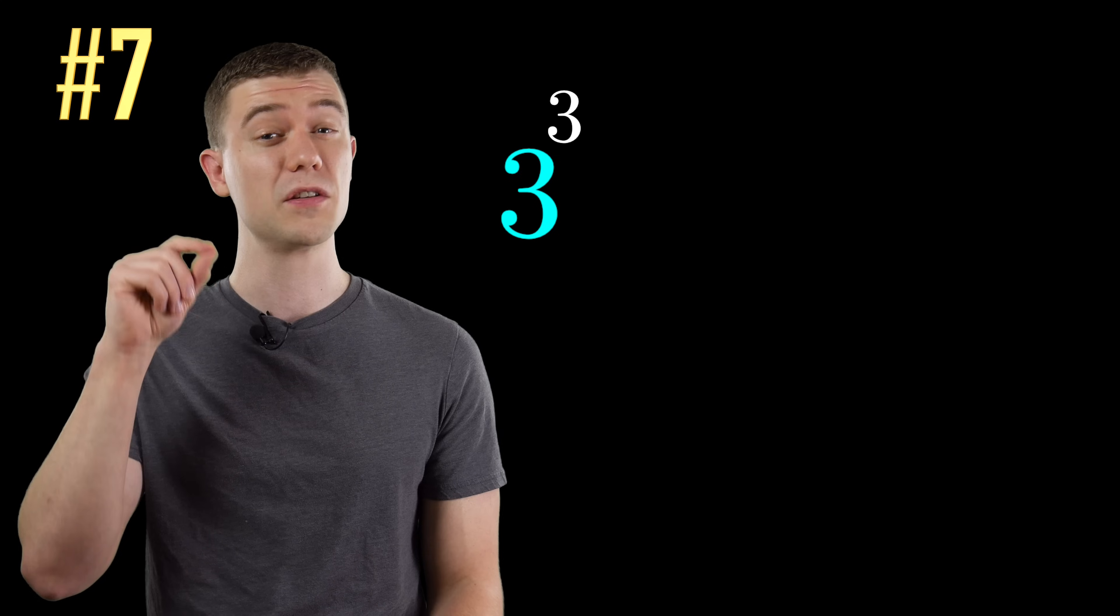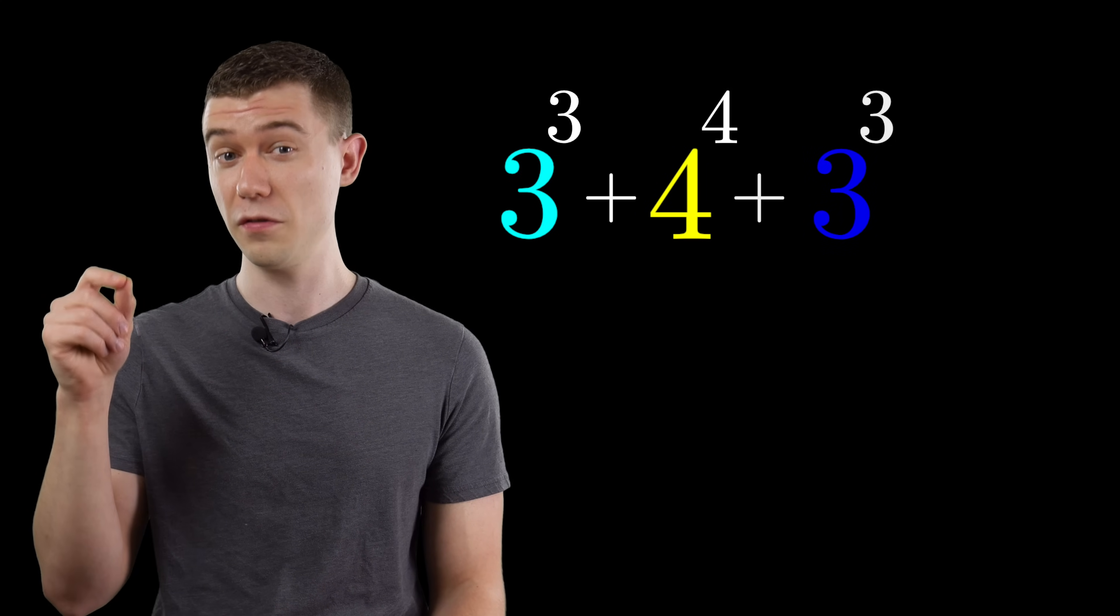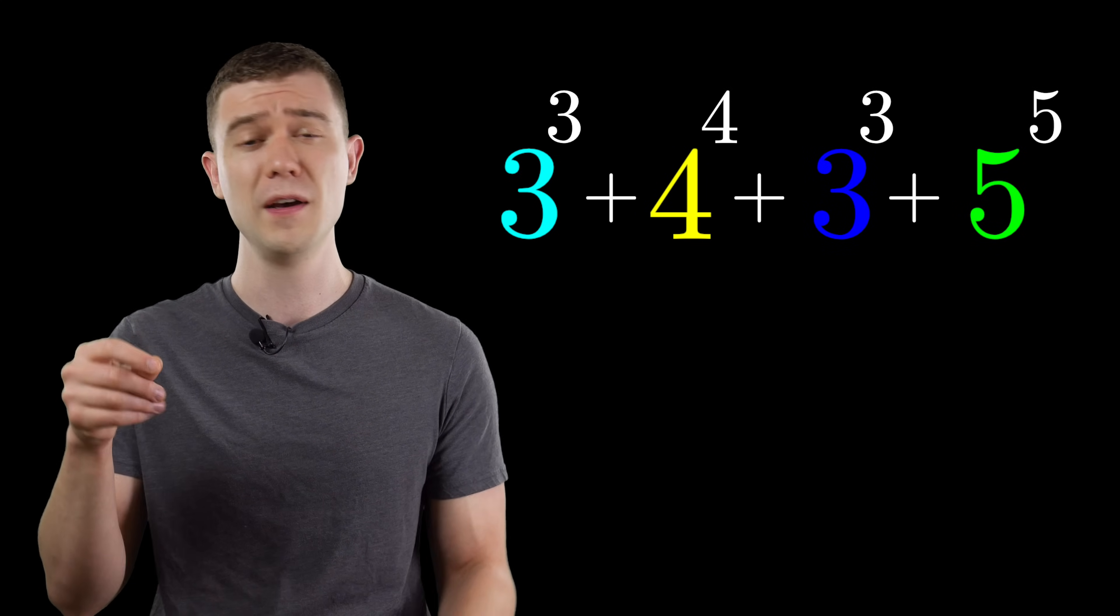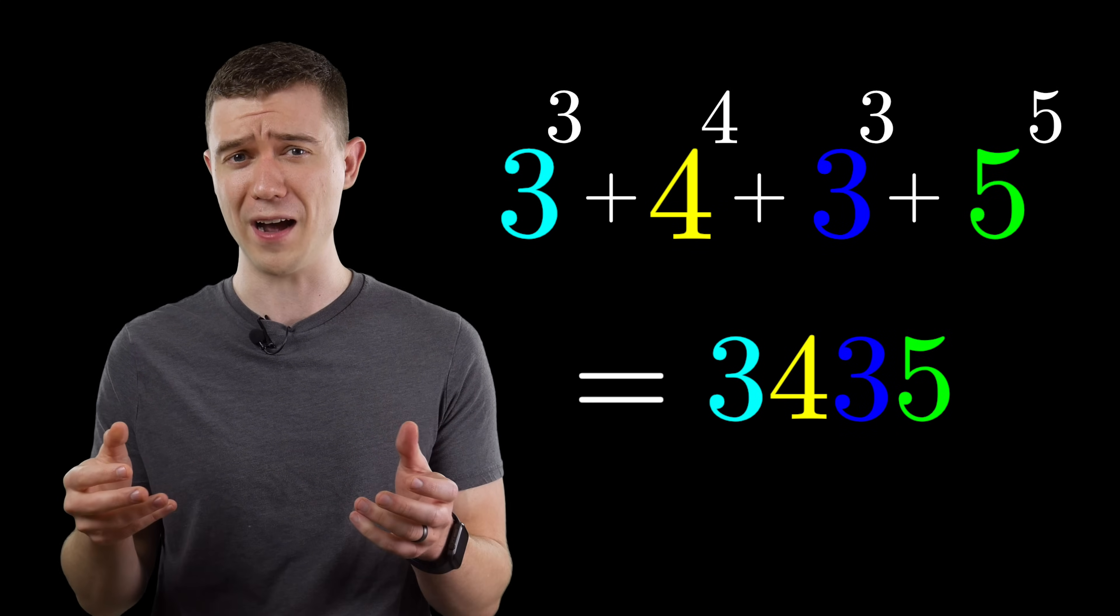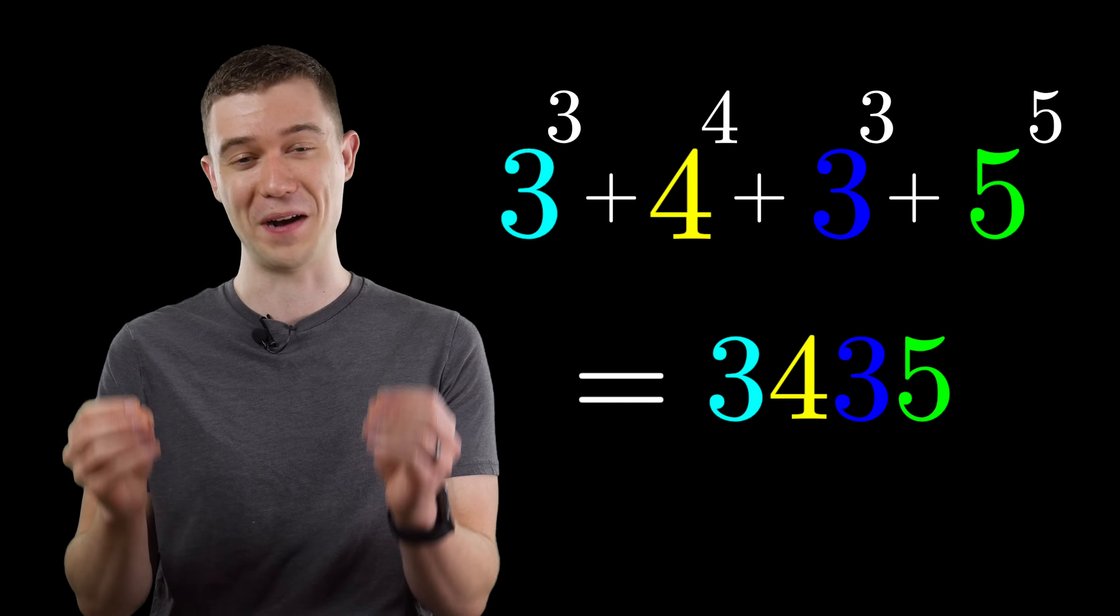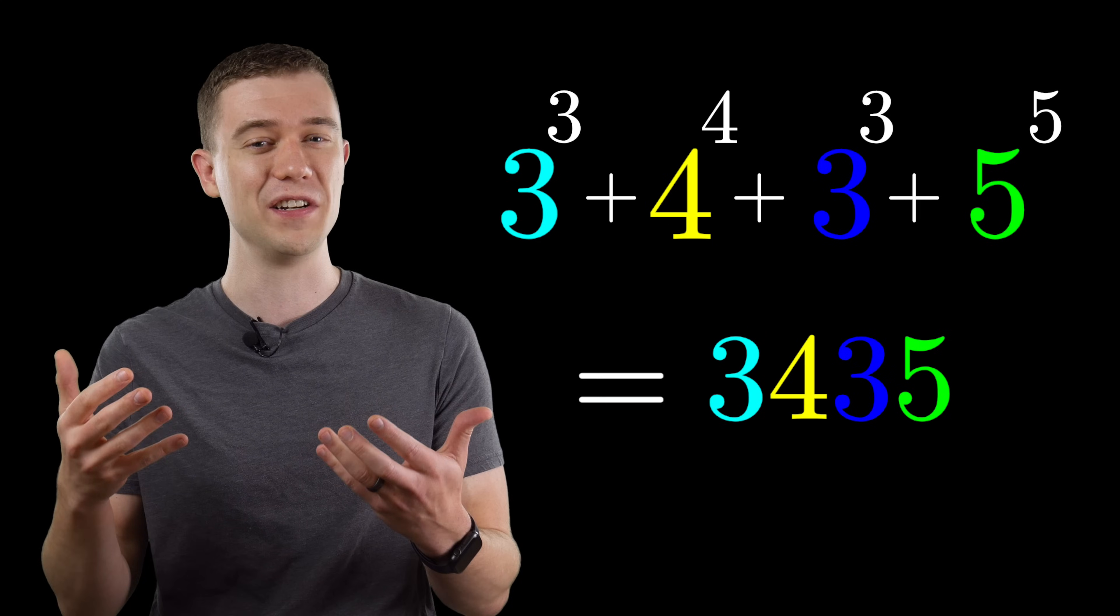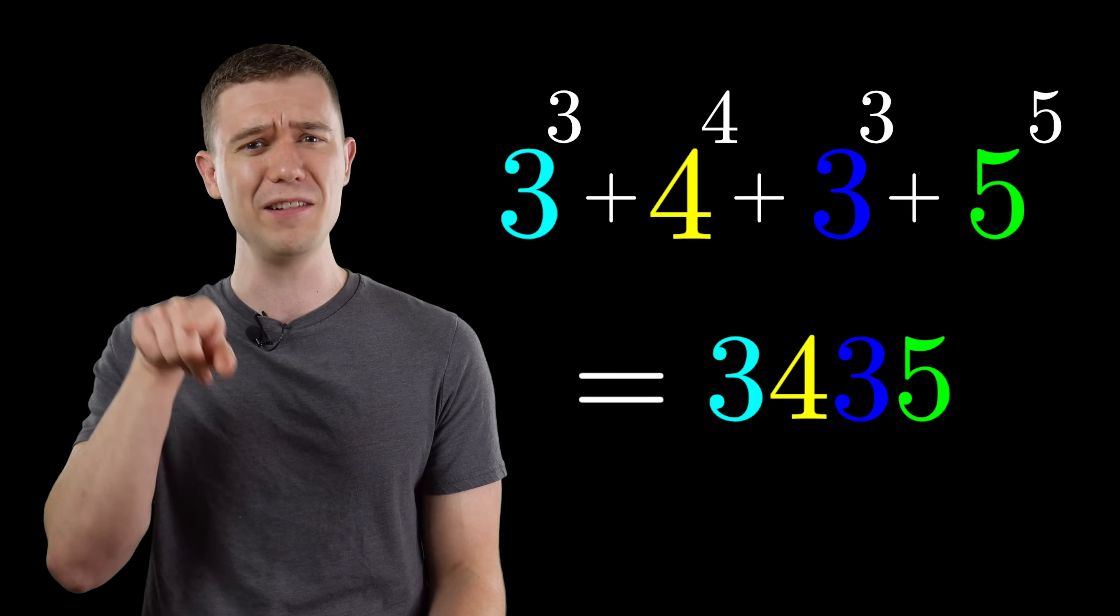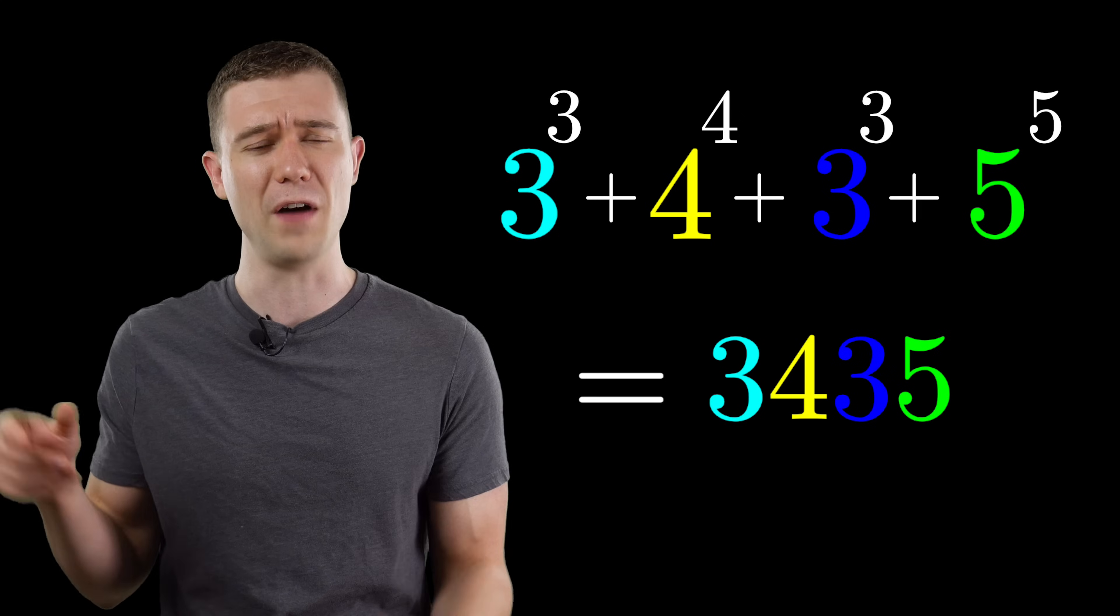3 to the third plus 4 to the fourth plus 3 to the third plus 5 to the fifth is, of course, 3, 4, 3, 5. How is that possible? Look at all the repetition of exponents, and it lines up so nicely as just 3, 4, 3, 5.